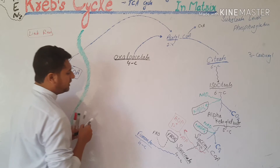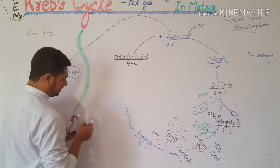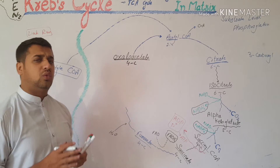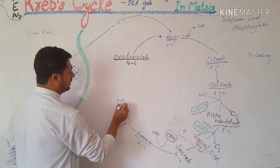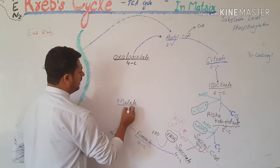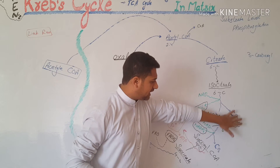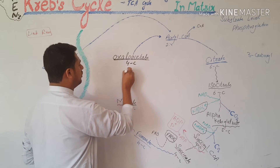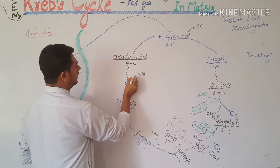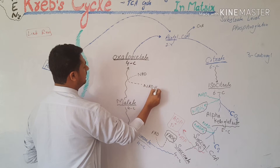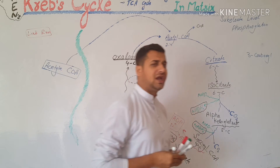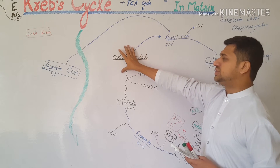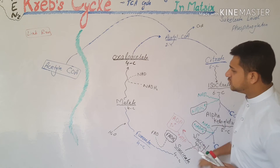Fumarate will be converted into another molecule by a process in which water is added. When fumarate gains a water molecule, it will be converted into malate. Malate is also a four-carbon molecule. Only in two steps of the cycle is carbon dioxide released; in all other steps the molecule remains four carbons. Malate is again converted into oxaloacetate when NAD enters and leaves as NADH₂. This oxaloacetate is now ready to do another cycle by combining with another acetyl group.